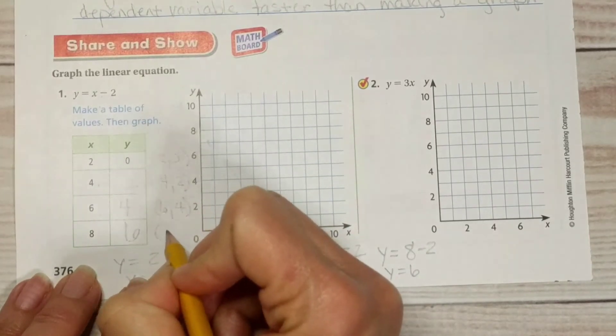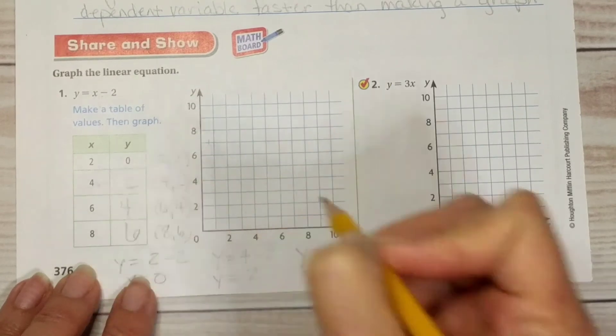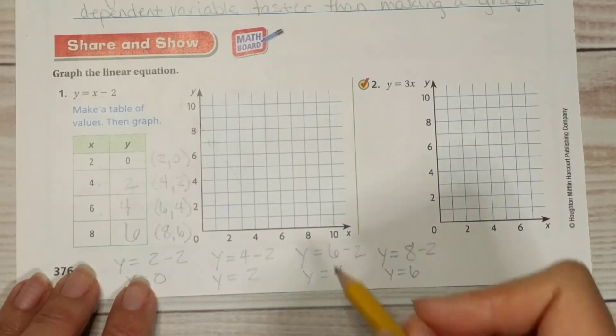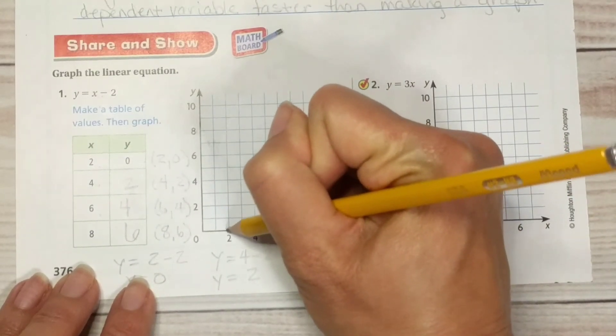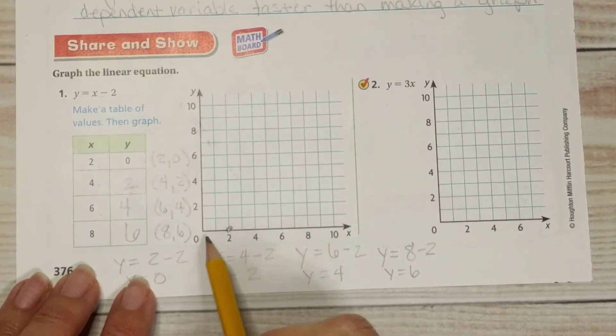All right let's do this again y equals now we have the value 6, 6 minus 2, y equals 6, 6 minus 2, y equals 4. So when x equals 6 y equals 4. Now let's do the last one. y equals x minus 2. We're going to put the 8 in for x so that's 8 minus 2 y equals 6.